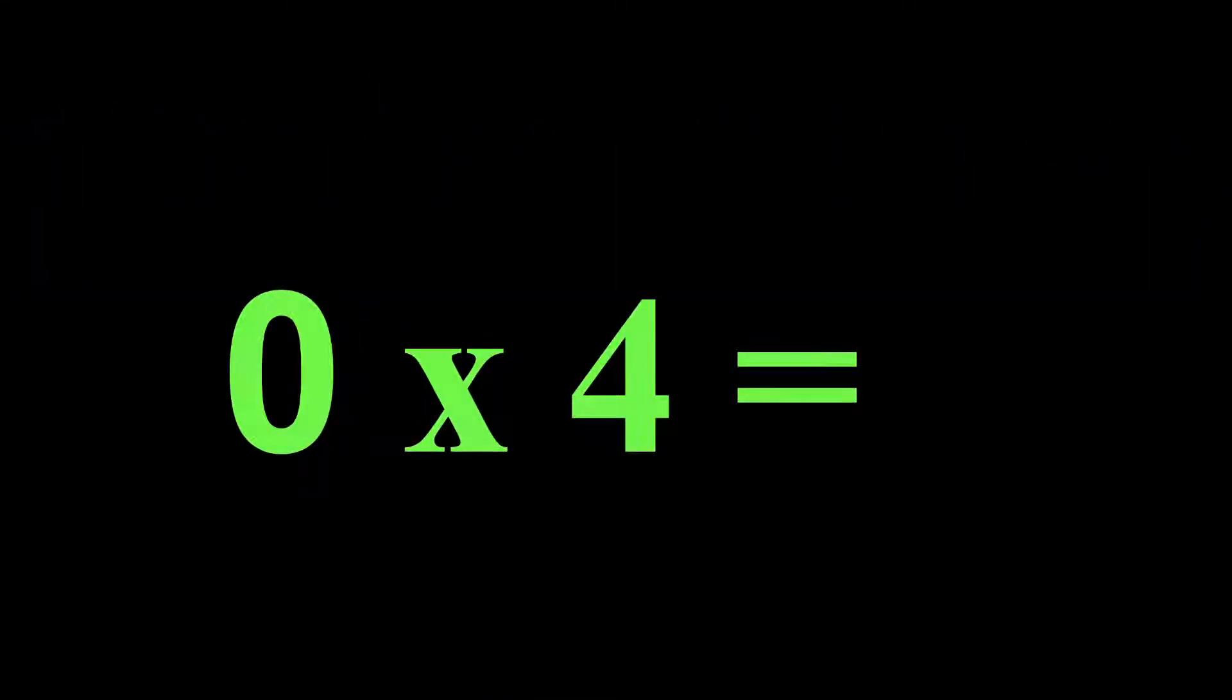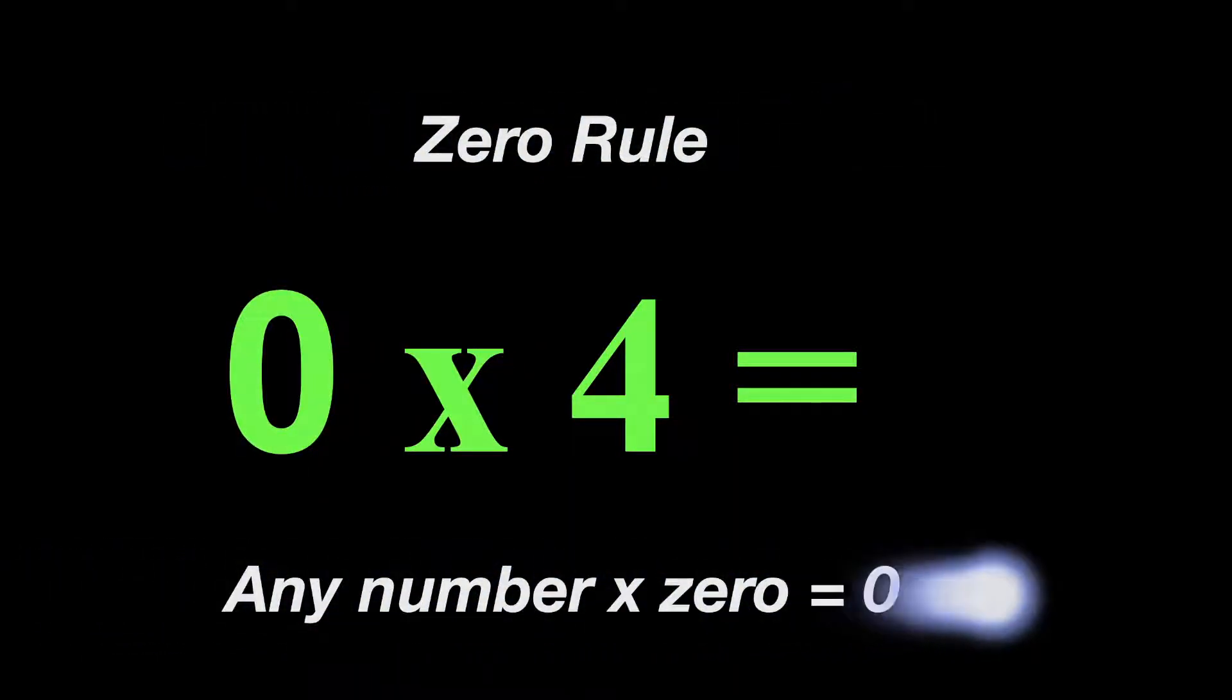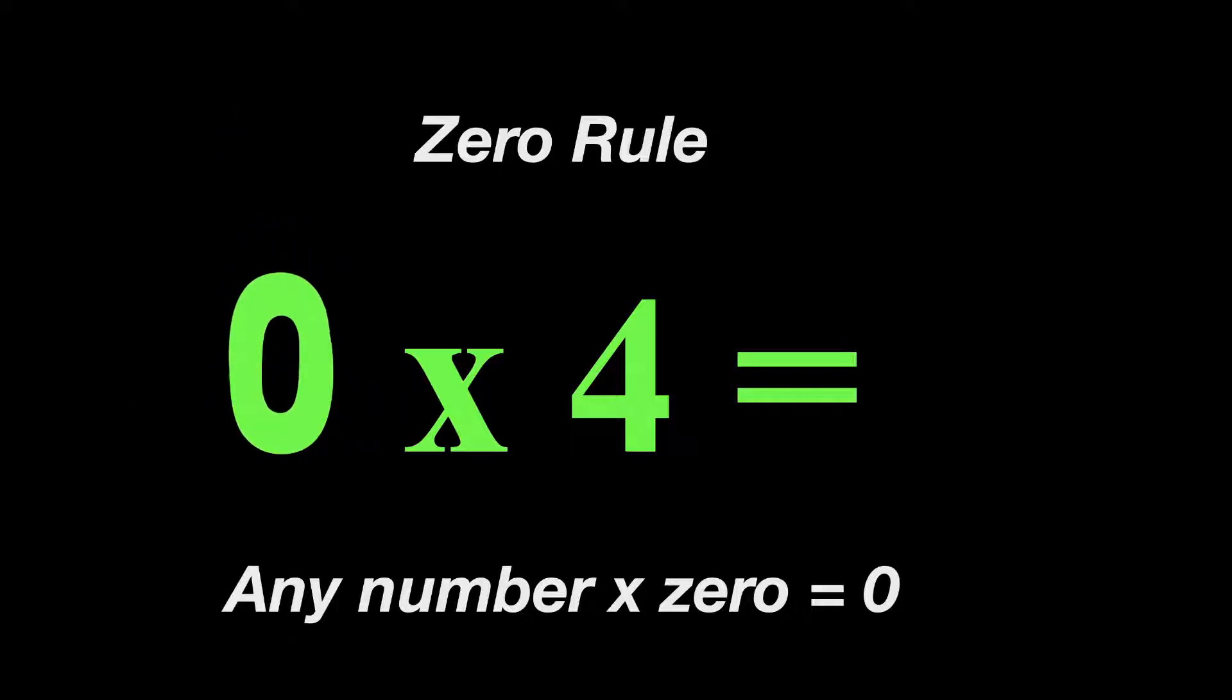Ready to practice? I'm going to mix them up a bit. Zero times four. Any number times zero will equal zero, and there's our zero. So zero times four is zero.